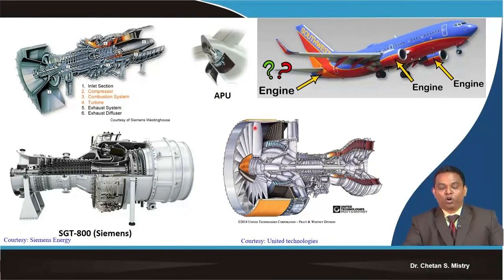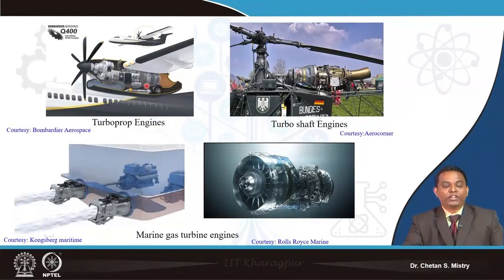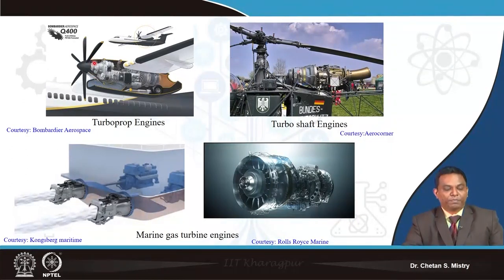Gas turbine engines have other applications too. Many regional transport aircraft and private jets use a propeller for propulsion, which is similar to a fan but with a different design approach. The entire thrust is generated by the propeller, and the power to rotate it is provided by the gas turbine engine.